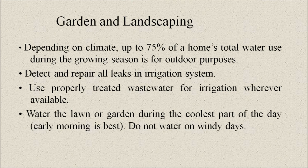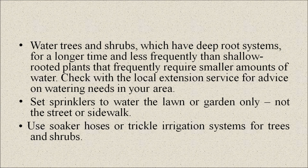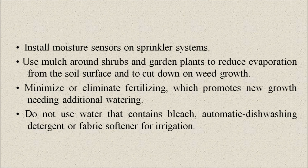Water the lawn and garden during the coolest part of the day — early morning is best. Do not water on windy days. Water trees and shrubs, which have deep root systems, for a longer time and less frequently than shallow-rooted plants. Check with the local extension service for advice on watering needs in your area. Set sprinklers to water only the lawn or garden, not the street or sidewalk. Use soaker hoses or trickle irrigation systems for trees and shrubs. Install moisture sensors on sprinkler systems. Use mulch around shrubs and garden plants to reduce evaporation from the soil surface and cut down on weed growth. Minimize or eliminate fertilizing, which promotes new growth needing additional watering. Do not use water that contains bleach, automatic dishwashing detergent, or fabric softener for irrigation.